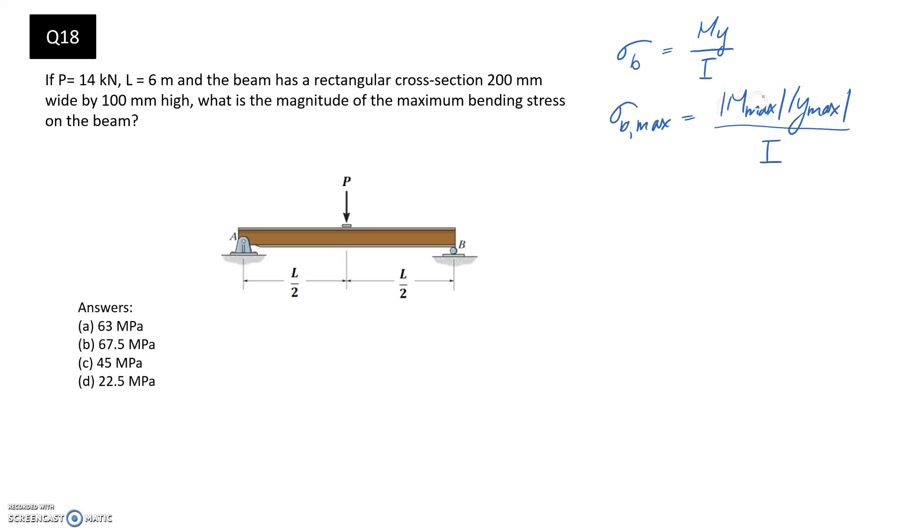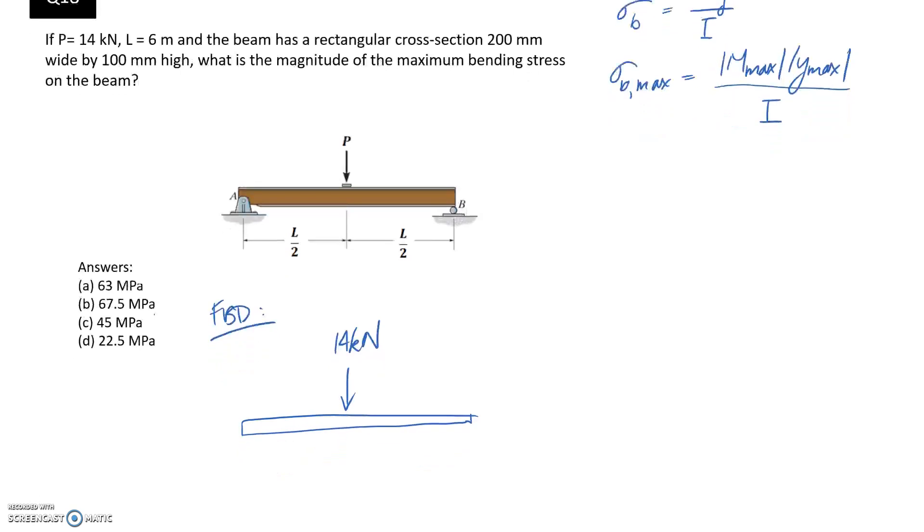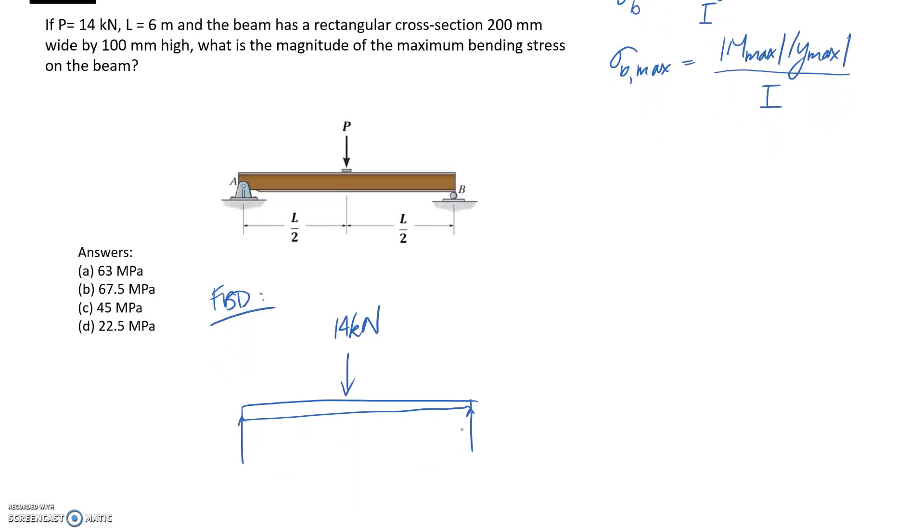So I'm going to start out by finding M max from that bending moment diagram. And in order to do that, we need to draw the free body diagram. So let's quickly draw that. So we know that P is equal to the 14 kilonewtons. So we can put that in the middle. And we can see that we have a pin and a roller on either end. And the force here is directly in the center. So what we would expect is that since it's directly in the center, half of the force would be taken by one end and the other half would be taken by the other end.